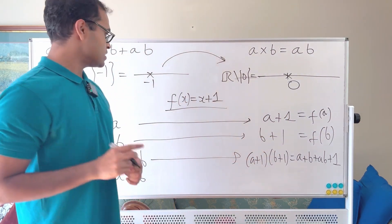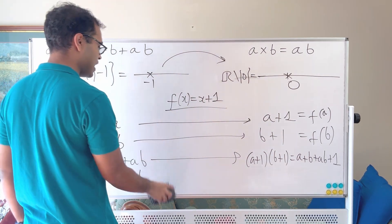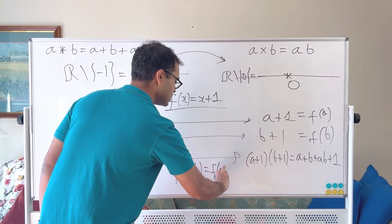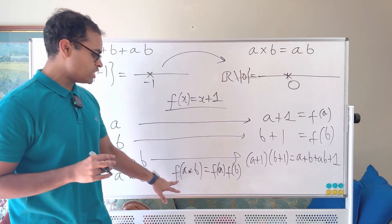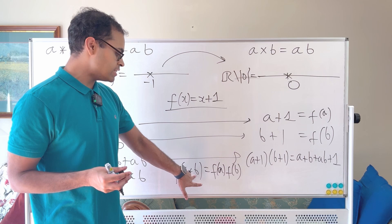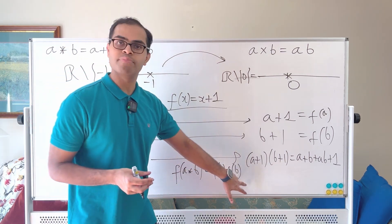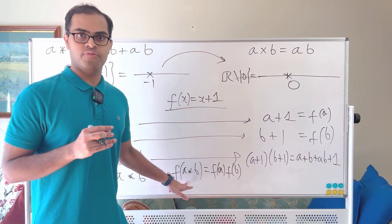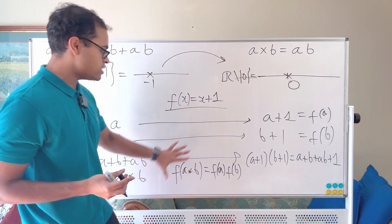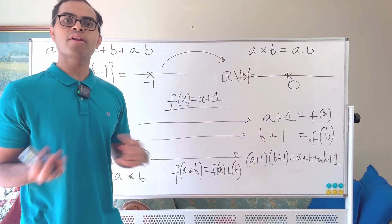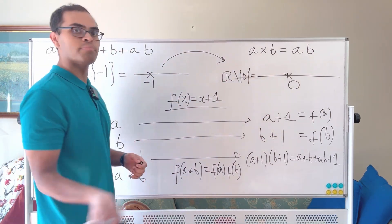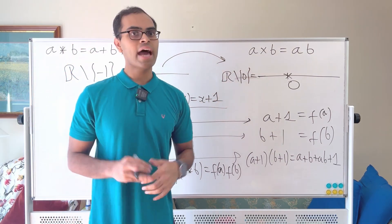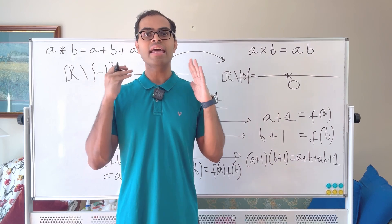We can write this down rigorously: f has the fundamental property that f(a ★ b) = f(a) × f(b). This means f is a machine that converts a ★ b into simply multiplying f(a) and f(b) — the left-hand side uses ★, the right-hand side uses multiplication. This is called a group isomorphism. It literally translates ★ into multiplication, and it is a one-to-one and onto function, so it has an inverse function g(x) = x − 1. Adding 1 goes left to right; subtracting 1 goes right to left.